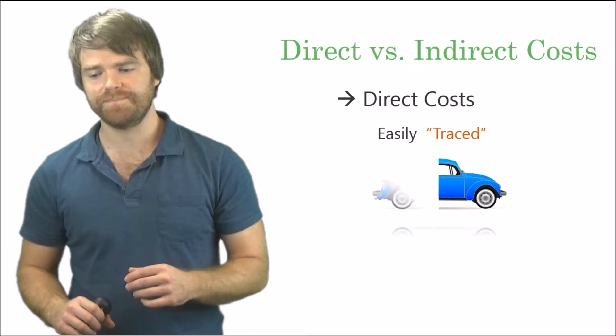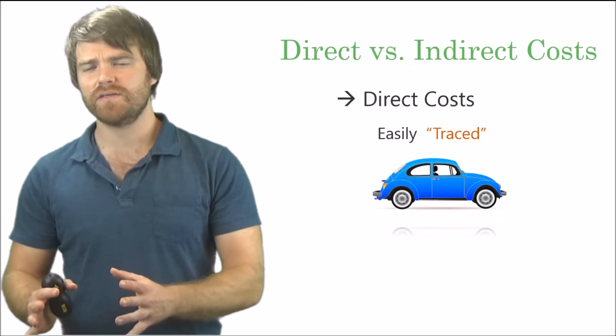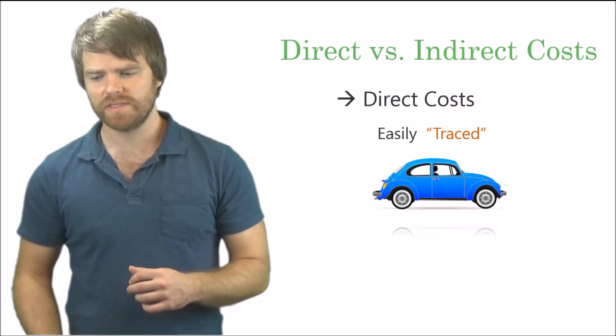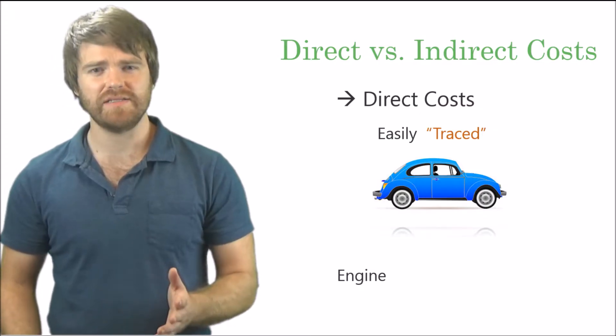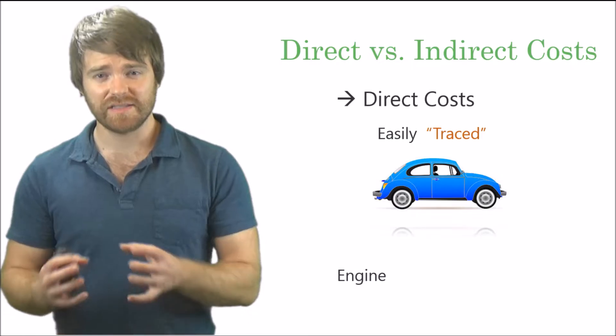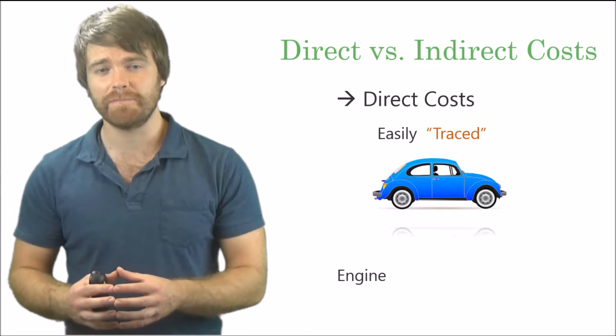So here's a cool example, we're going to use a car. So what are some direct costs that you can easily trace to a car? What can you recognize there? Let's think about it. So an engine, that's easy right? You open the car's hood, there's an engine. That's a direct material is what they call that and we'll go over that in a little bit but that is easily traced or directly traced to that car.